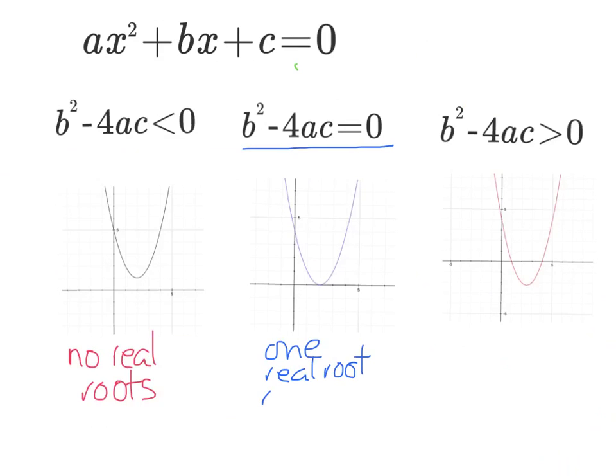We sometimes say it's a repeated root. The reason being, an example would be x minus 2 squared, y equals x minus 2 squared would give us this. b squared minus 4ac of that would be equal to zero.